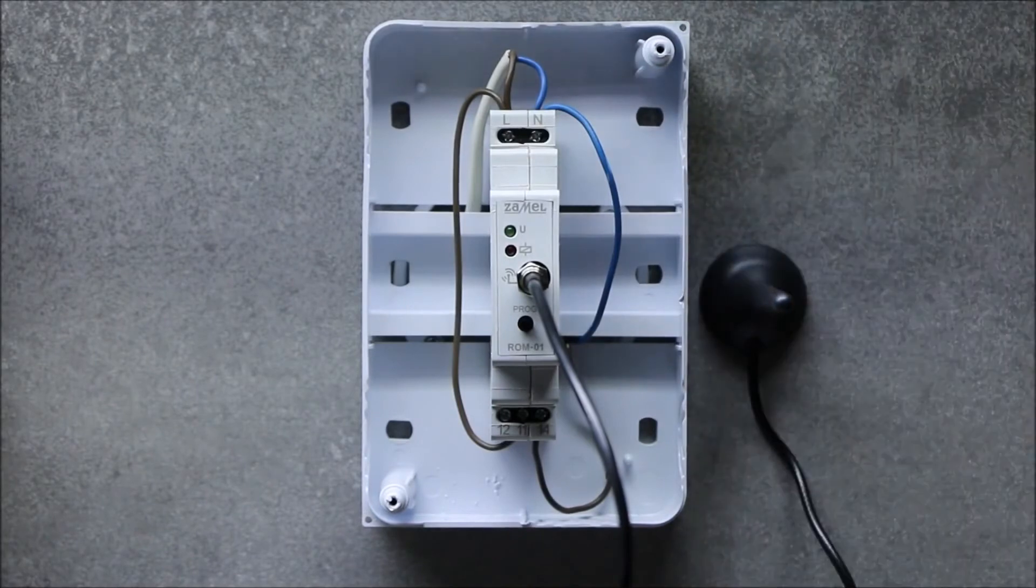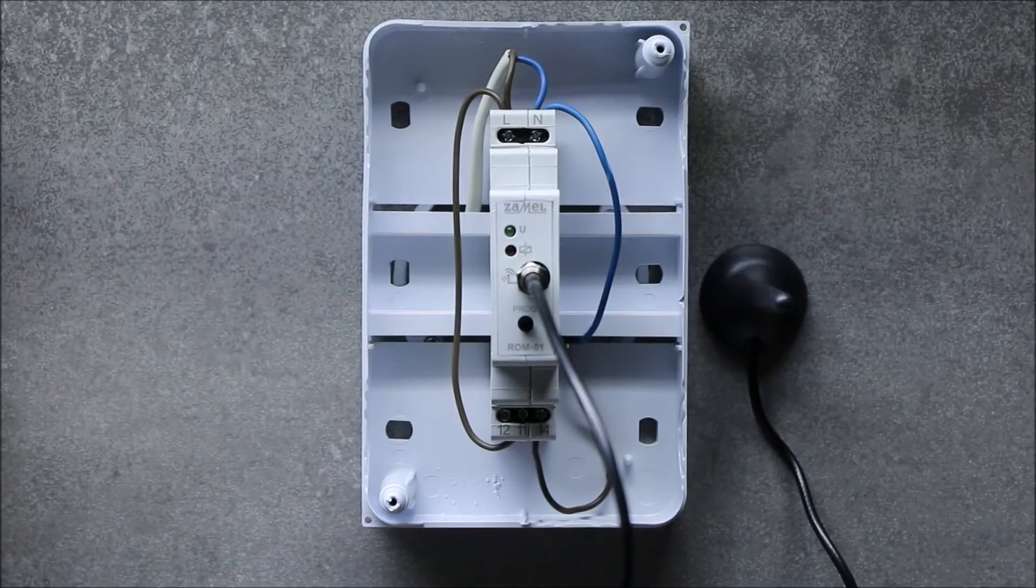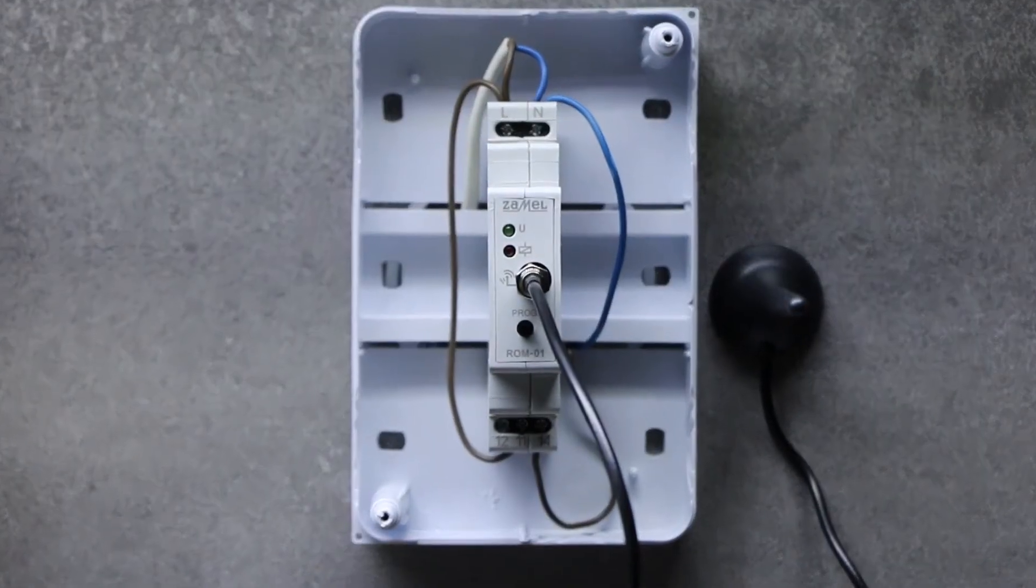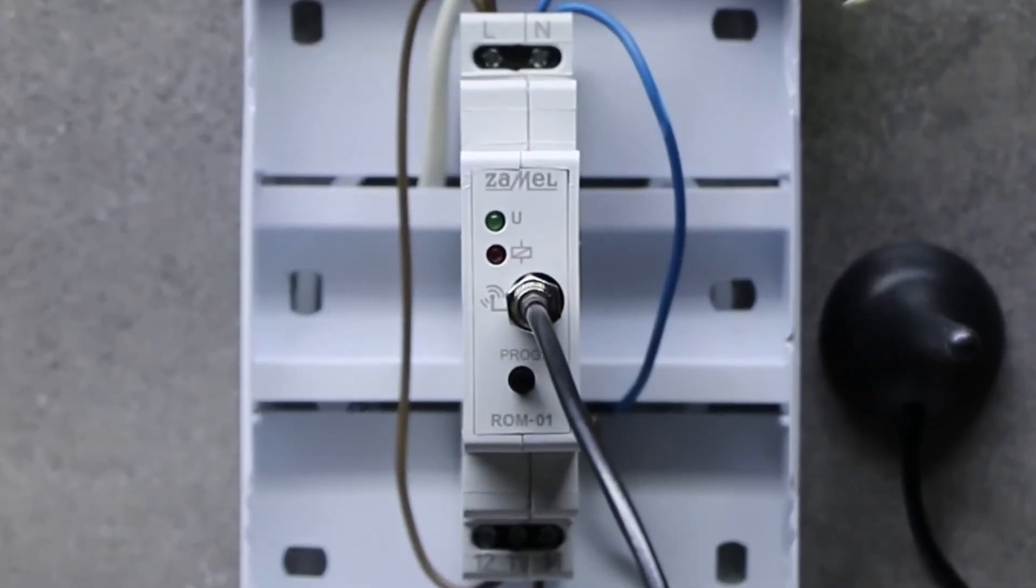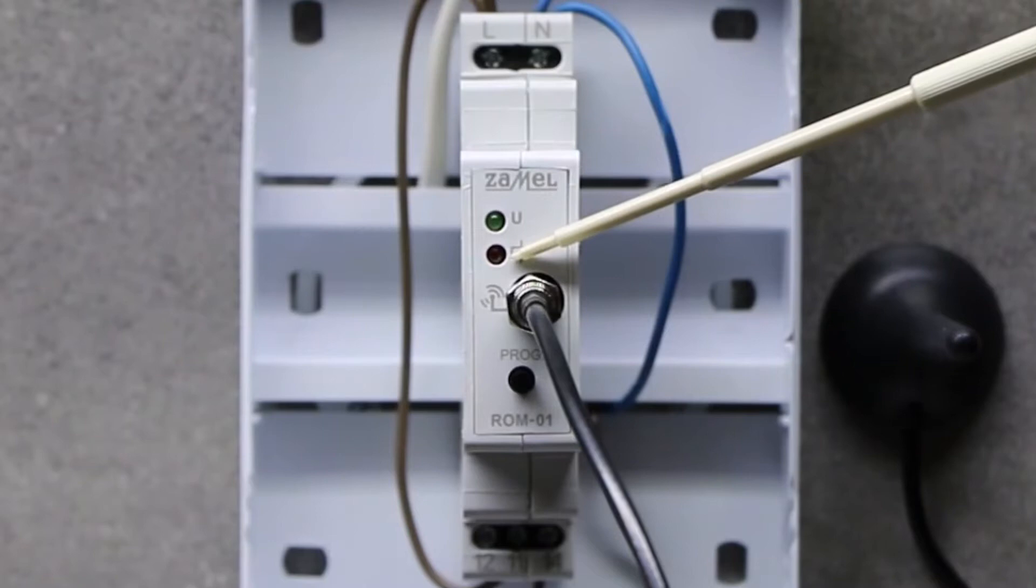The receiver has two LED indicators on the front panel. The green LED indicates the power supply, and the red one, the output status.